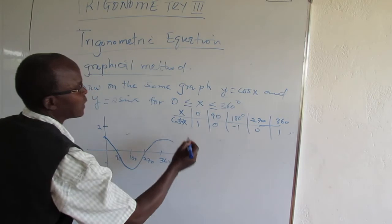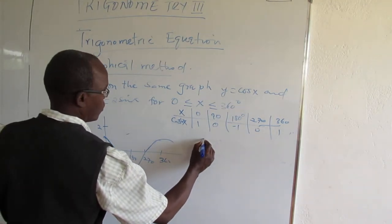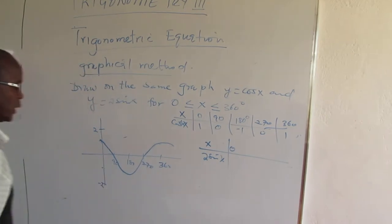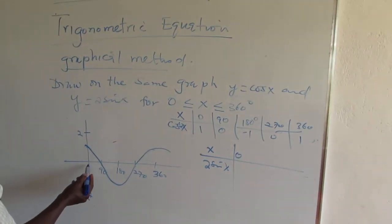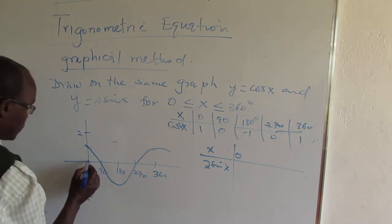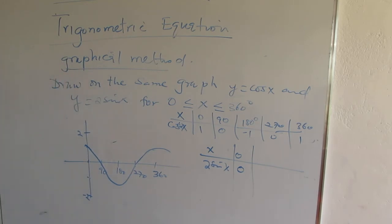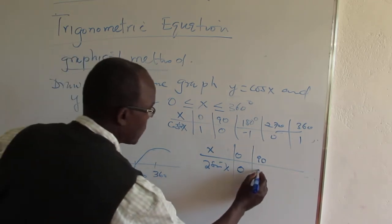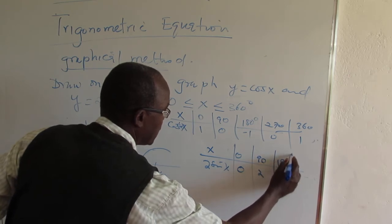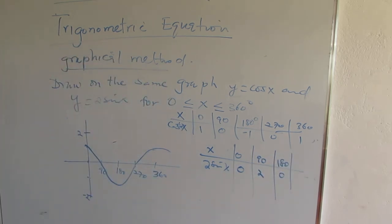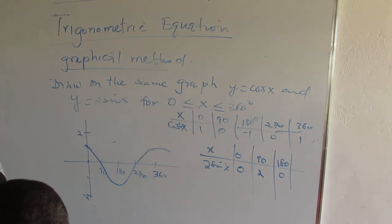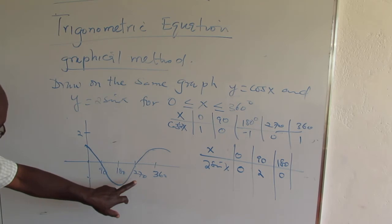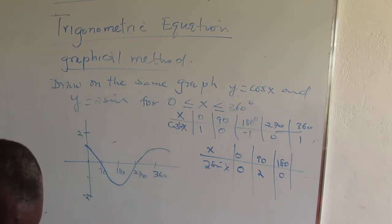Now make the other table for x and 2 sine x. When x is 0, 2 sine x will be 0 also. When it is 90 degrees, sine 90 is 1 times 2 is 2. When it is 180, 0 times 2 is 0. When it is 270, sine 270 is negative 1, times 2 is minus 2.